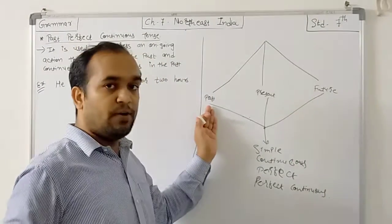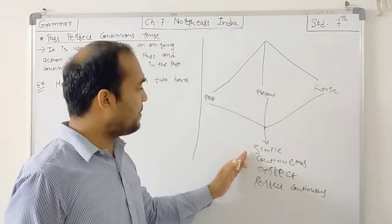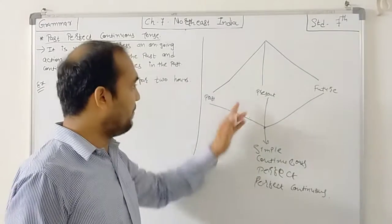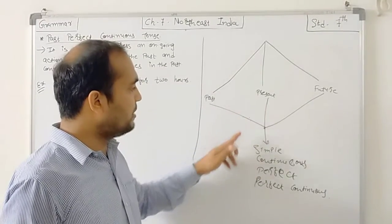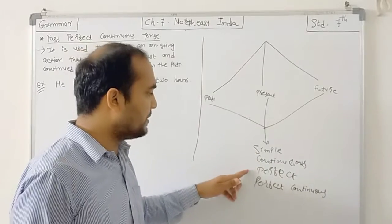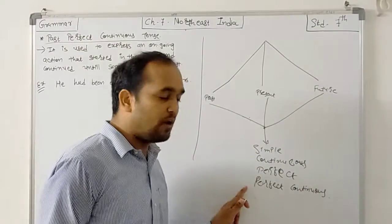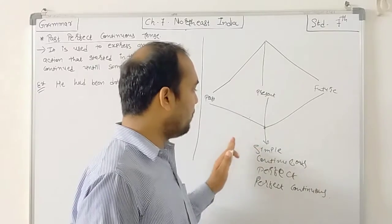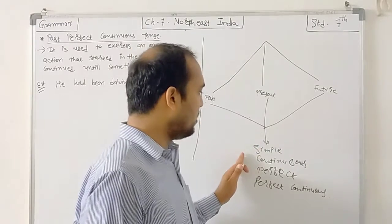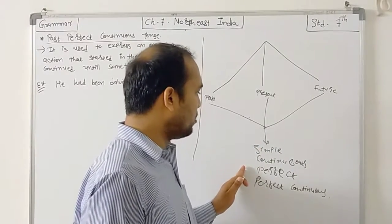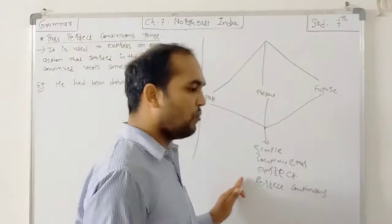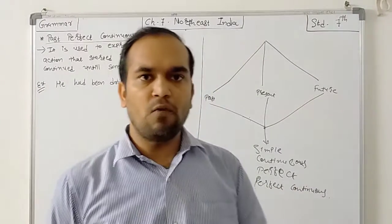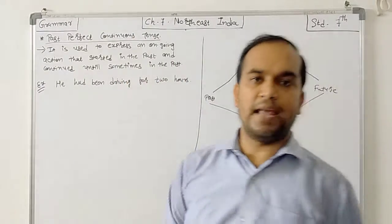Suppose if we talk about past: simple past, past continuous, past perfect, and past perfect continuous. And if we are talking about present: simple present, present continuous, present perfect, and present perfect continuous. So if we count all of them, there are 12 tenses.